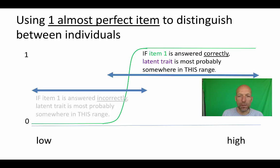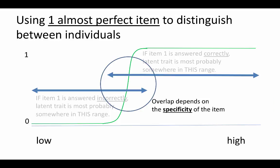Assuming that the latent trait is normally distributed in a population, the overlap depends on the specificity of the item. If the item is very specific, there will be hardly any overlap. If the item is not very specific, the overlap will be substantial.